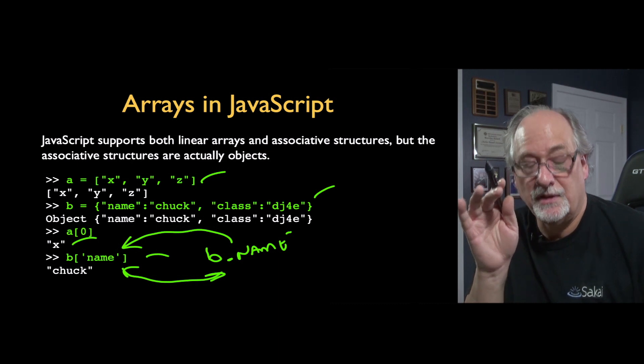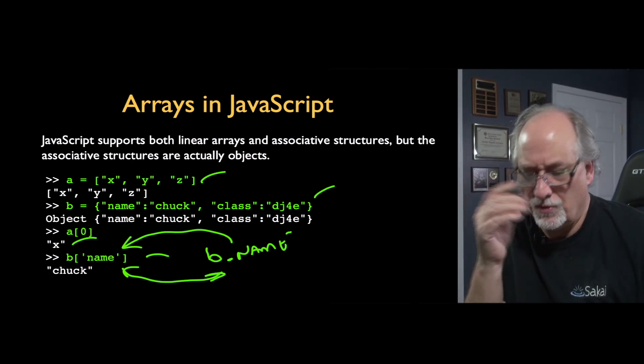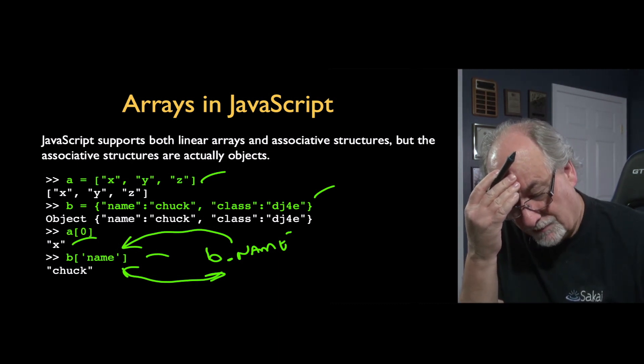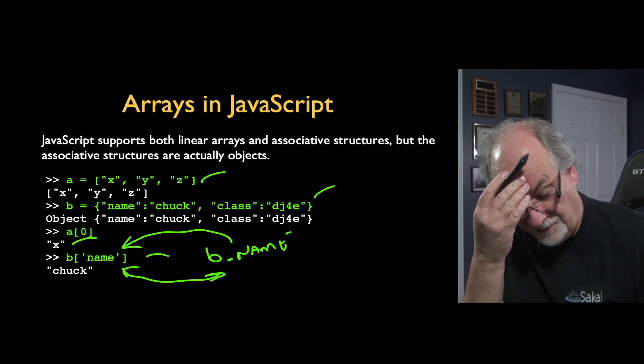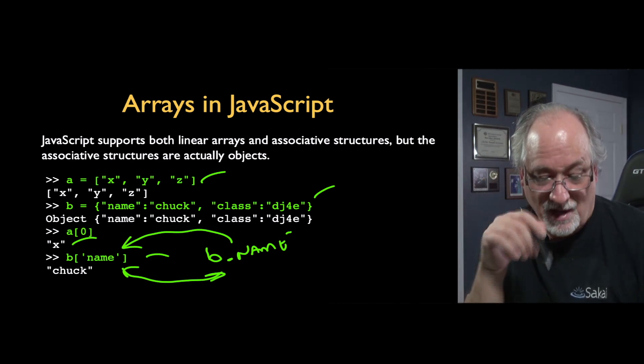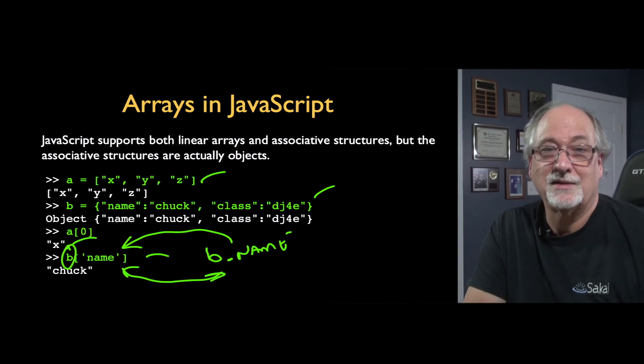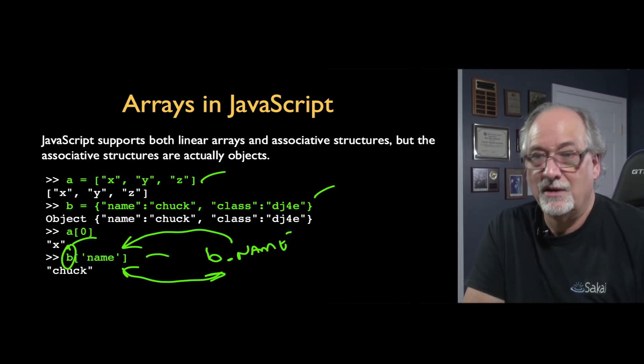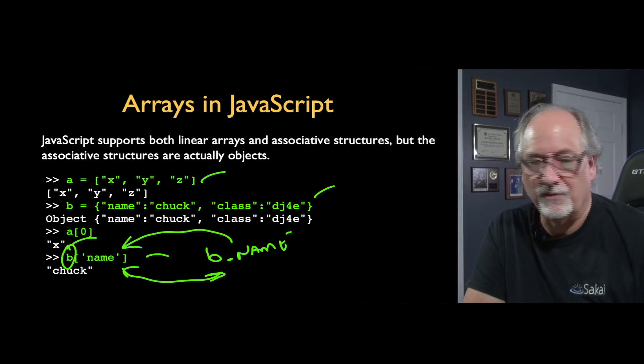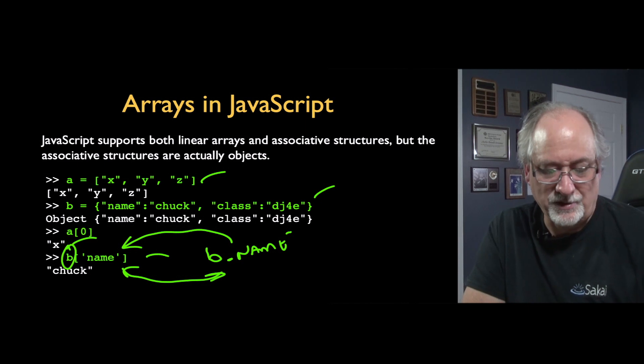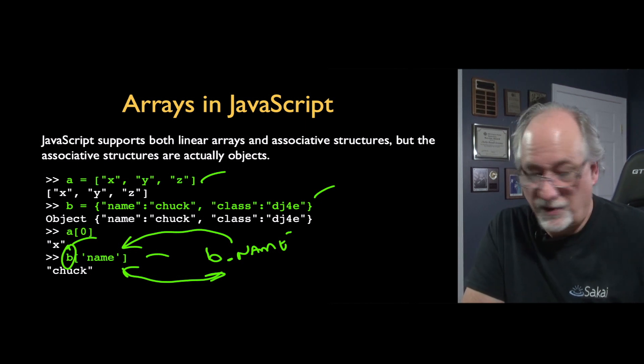And again, equivalent, they are the same thing, even though for every other language you ever look at, you think those are very different creatures. But not so in JavaScript. And it has to do with the fact that b is an object. And so objects are the associative structures. But they're even more powerful than associative arrays are in some languages, like dictionaries.